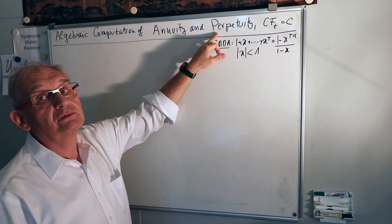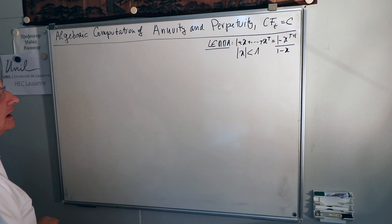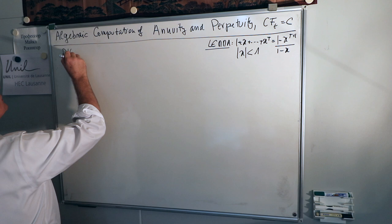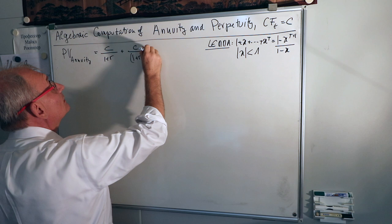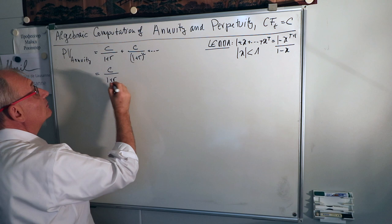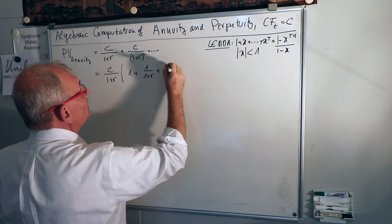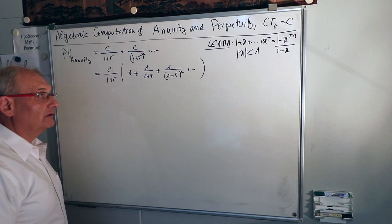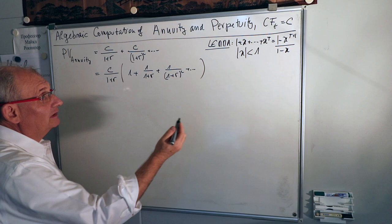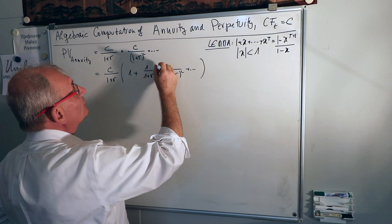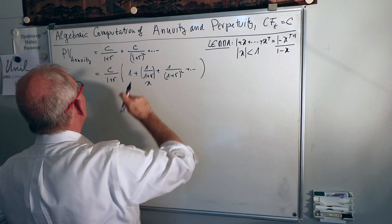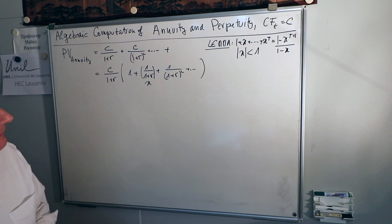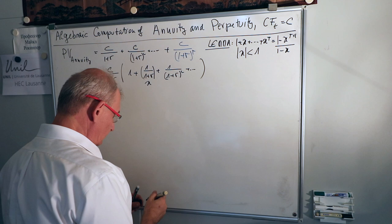The present value of the annuity is: c divided by (1+r), plus c divided by (1+r)^2, and so forth. I can factor out c divided by (1+r) and get 1 plus 1/(1+r) plus 1/(1+r)^2 and so on. In the case of an annuity, the terminal term is c divided by (1+r)^t.